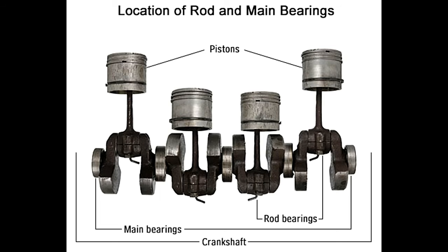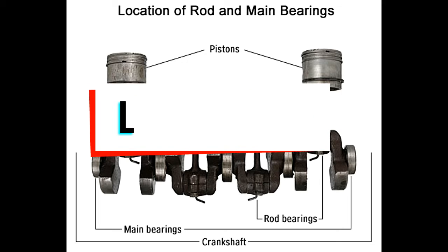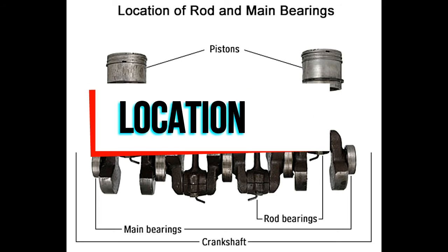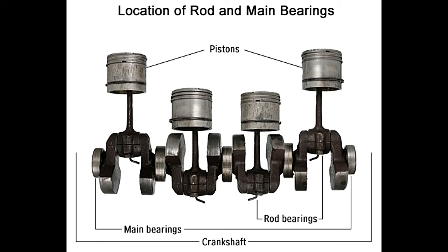Location. In an IC engine, the pistons are attached to connecting rods, which in turn are attached to the crankshaft. Finally, the crankshaft is attached to the engine block. Rod bearings are inserted between the rod and the crankshaft. Main bearings are present between the crankshaft and the block.